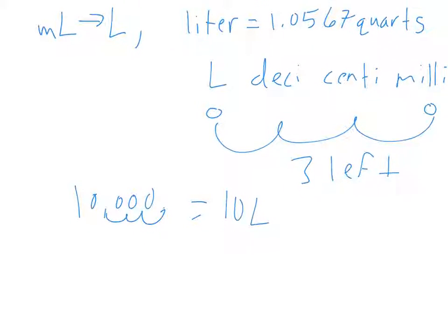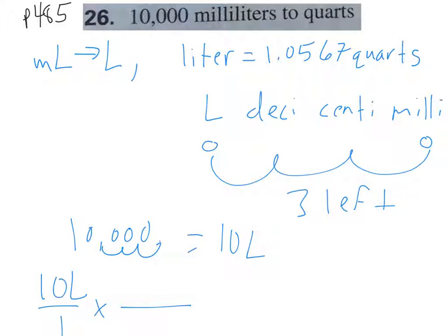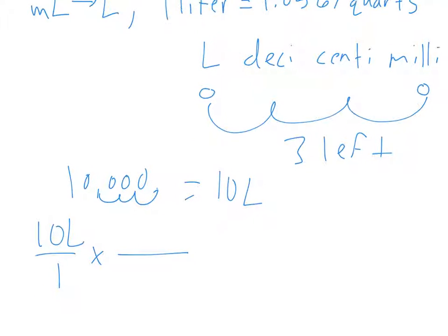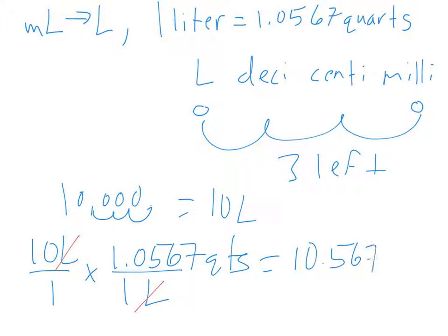Now convert from 10 liters to quarts. Put 10 liters over 1, then multiply by the conversion fraction: 1 liter equals 1.0567 quarts. Since liters is on top, 1 liter goes on the bottom and 1.0567 quarts goes on top. Liters cross-cancel. The answer is 10 × 1.0567 = 10.567 quarts.